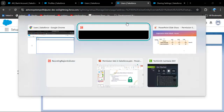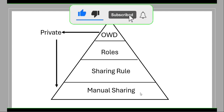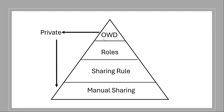After logging out, we will look at the role hierarchy of record level security. We have seen OWD; now we will see roles, then sharing rules, and then manual sharing. Importantly, when OWD is private, only roles, sharing rules, and manual sharing come into the picture. If OWD is not private, these three mechanisms are not needed.